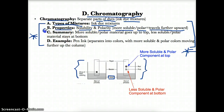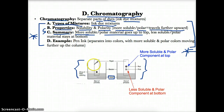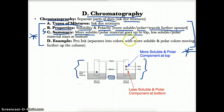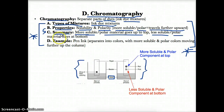During chromatography, more soluble or polar materials will go further up to the top. That's because when you put a paper in water, water will travel up the paper. The more something dissolves or the more polar it is, the more easily it can mix with the water and travel with it as it bleeds up through the paper. So more soluble or polar materials go up to the top as the water travels. On the other hand, less soluble or less polar materials will stay at the bottom.